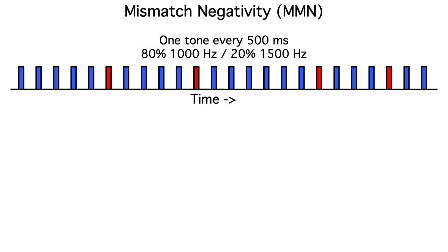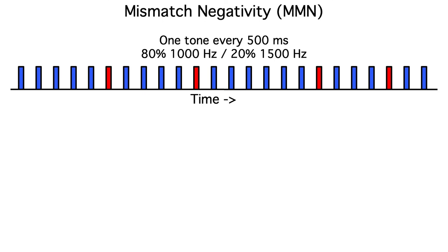Another interesting auditory component is the mismatch negativity. We see this component if we use an auditory oddball paradigm. For example, we might present a tone every 500 milliseconds, with 80% being 1000 Hz standard tones and the other 20% being 1500 Hz deviant tones. The deviant tones elicit a larger negative response than the standards around 200 milliseconds — this is called the mismatch negativity or MMN. The data shown here are from the ERP-Core MMN task, where we used intensity deviance.